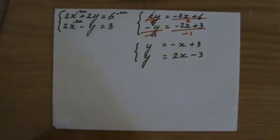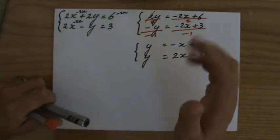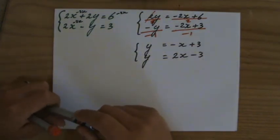Good. I've written both my equations now in the gradient intercept form. Now I'm going to graph them, and then I'll look at their point of intersection, which is my solution.